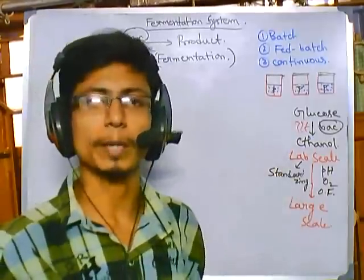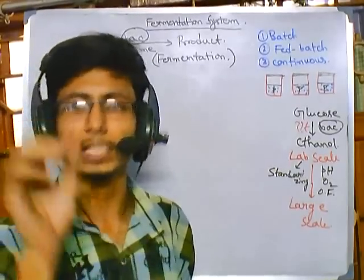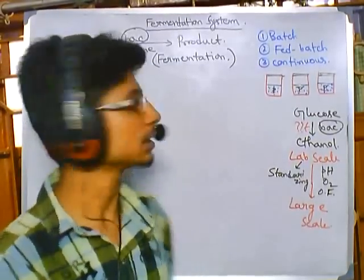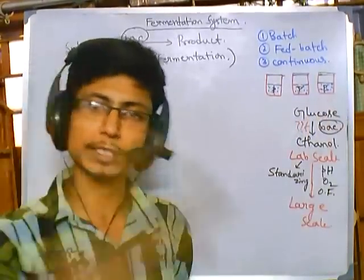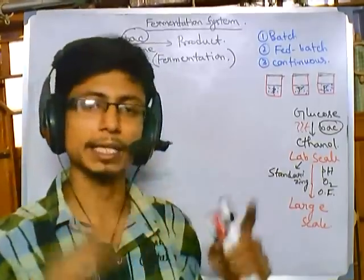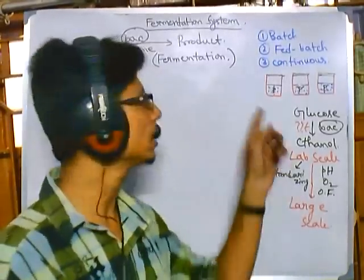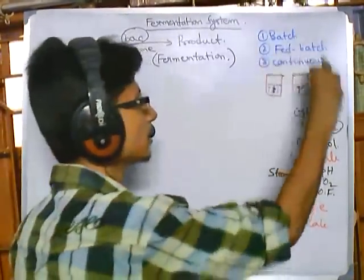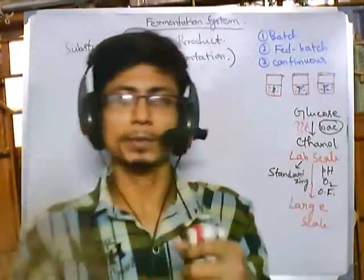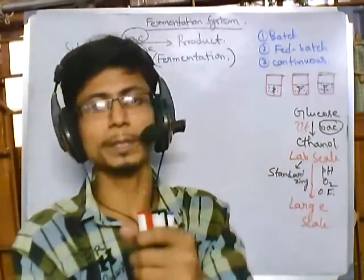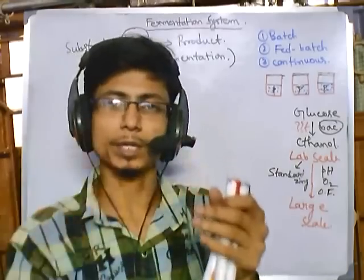If we provide too much substrate to bacterial cells at once, they cannot grow rapidly. So for proper growth, we provide substrate in little amounts — this is done in fed-batch fermentation. In the batch process, we provide everything at the beginning, give some time, and at the end take out the product. This is the simplest type of fermentation — fermentation is carried out in batches.